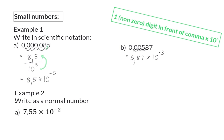In example 2, we are asked to write as a normal number. We are given scientific notation and can see that the exponent is negative. This means this is actually a small number, and we will have to divide by 10 two times. To do that, we will move the comma to the left. Once we have moved the comma 1 space to the left, it will be in front of the 7. To move it another space to the left means we will have to add a 0 so that the comma can be in front of that 0, and our final value is 0,0755.